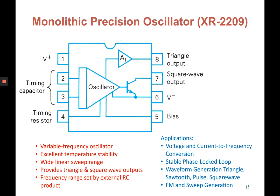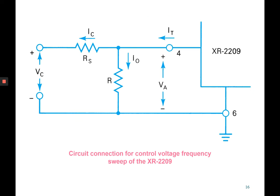Next is the monolithic precision oscillator with model number XR2209. It is a small chip with 8 pins and is a variable frequency oscillator with excellent temperature stability. It has a wide linear sweep range and provides triangle and square wave outputs — it is not used for sine wave output. The frequency range is set by an external RC component connected outside the IC. Applications include voltage and current to frequency conversion, phase-locked loops, waveform generation (triangle, pulse, and square wave), and FM and sweep generation.